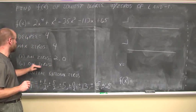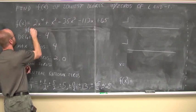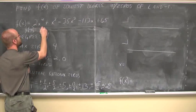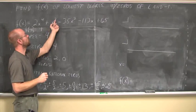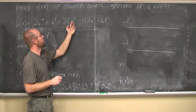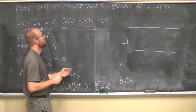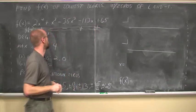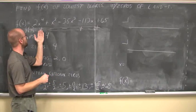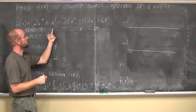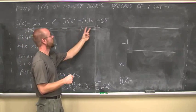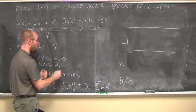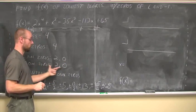For negative real zeros, we evaluate f of negative x. A negative to the fourth power doesn't change sign; a negative cubed changes sign; a negative squared doesn't change sign, so it remains negative; and a negative times a negative changes sign; the constant never changes sign. Looking at those signs: positive changes to negative — one sign change — then it changes back to positive. So there are two sign changes, meaning either 2 or 0 negative real zeros.